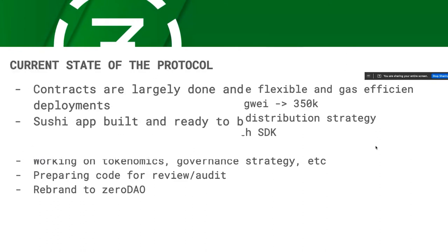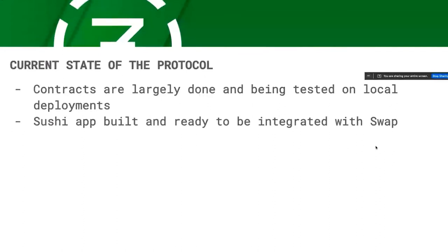We're at the point now where the protocol's pretty close. Contracts are largely done, we're testing on local deployments, and the Sushi app is built and ready to be integrated when the code's ready. We're pretty imminently looking to do a stealth launch on Polygon. When you're working with code that has to interact with numerous different protocols — RenVM, SushiSwap or Uniswap — it's very hard to test on a testnet. Last year we burned a lot of time and gas trying to test on Rinkeby. Now Ren's on Polygon and Sushi's on Polygon, so we can launch there, do $5 trades, and crank through a lot of live money testing.